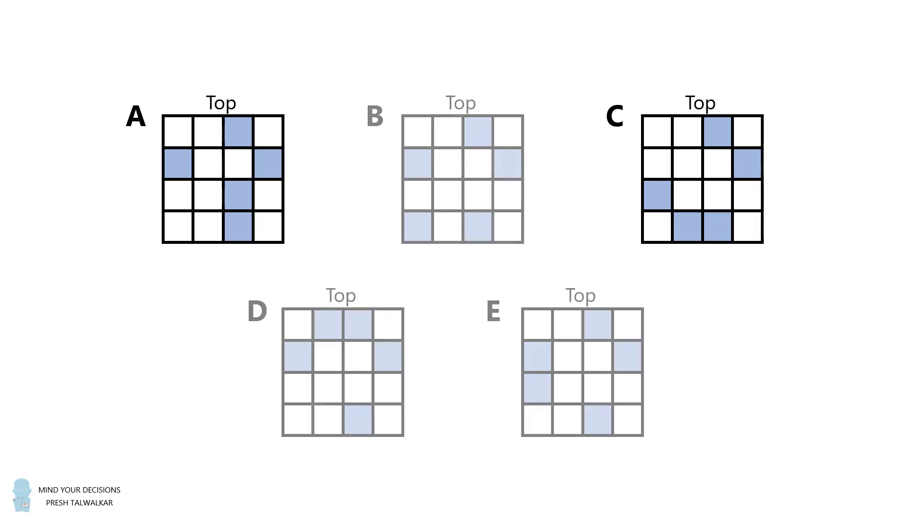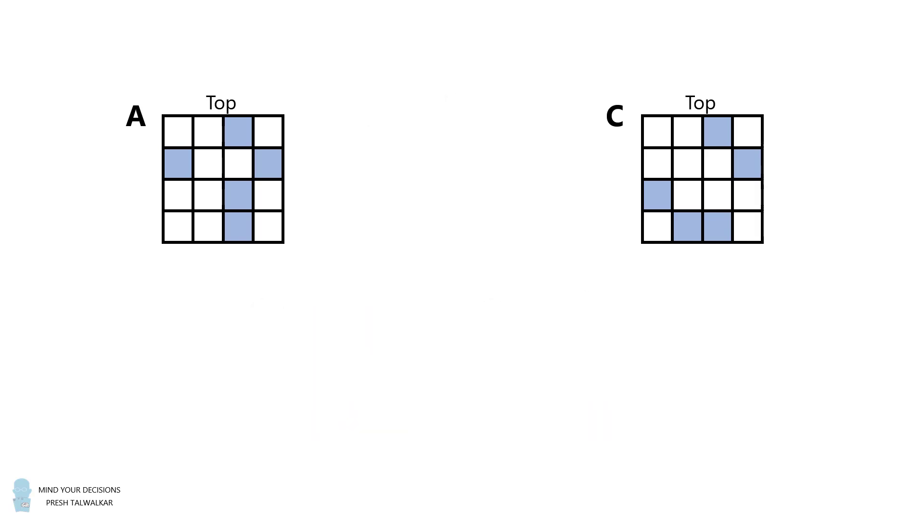Let's first compare grids A and C. Suppose grid A was the correct grid. Then grid C would have exactly one square different from grid A. However, we can see that grid C has two squares that are different from grid A. By the reverse logic, this shows that grid C cannot be the correct grid.